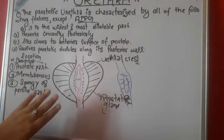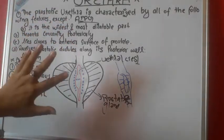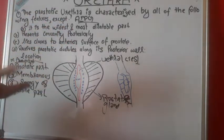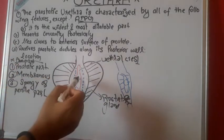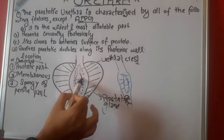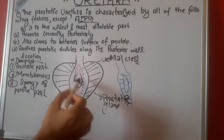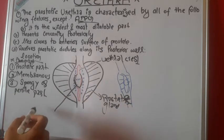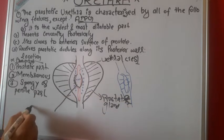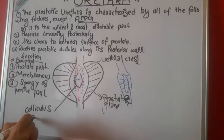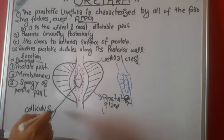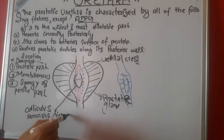After the urethral crest, there is the colliculus seminalis, also known as verumontanum. This is the rounded elevation in the middle of the crest, known as colliculus seminalis or verumontanum.